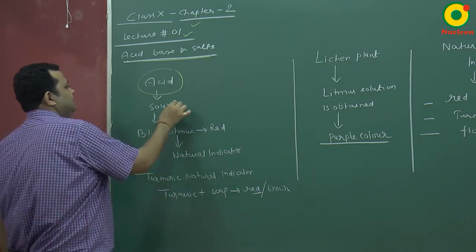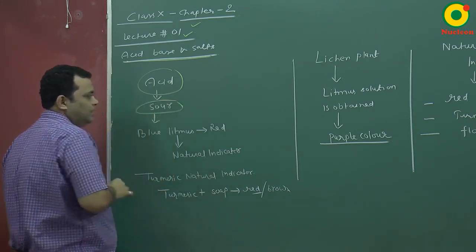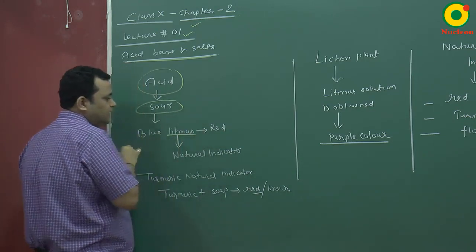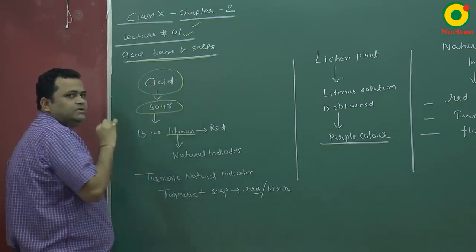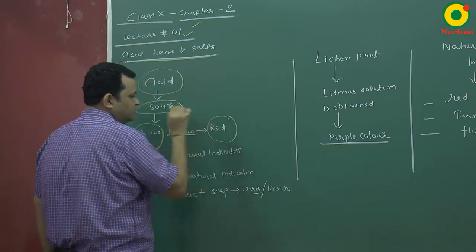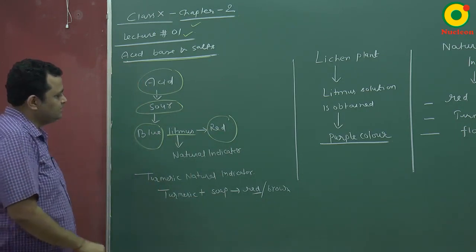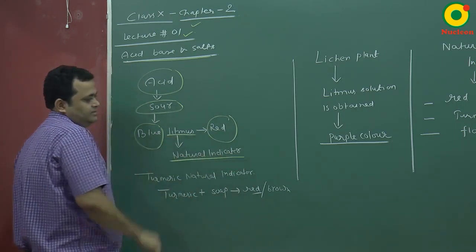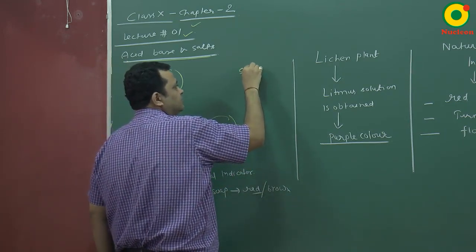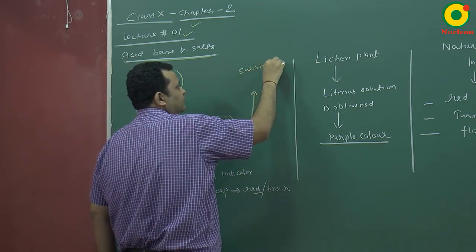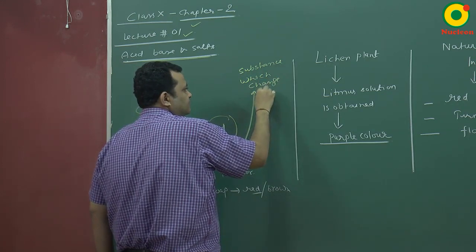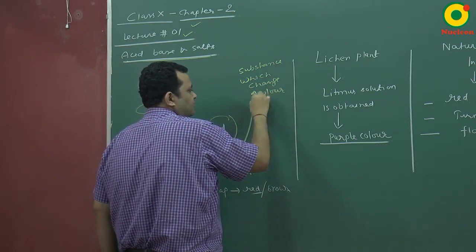Acids are sour and corrosive. If we want to test them, litmus paper is one thing that can identify whether acid or base is present. The blue color of litmus changes into red color in acid. Litmus is a natural indicator — a substance which can change color during a reaction.